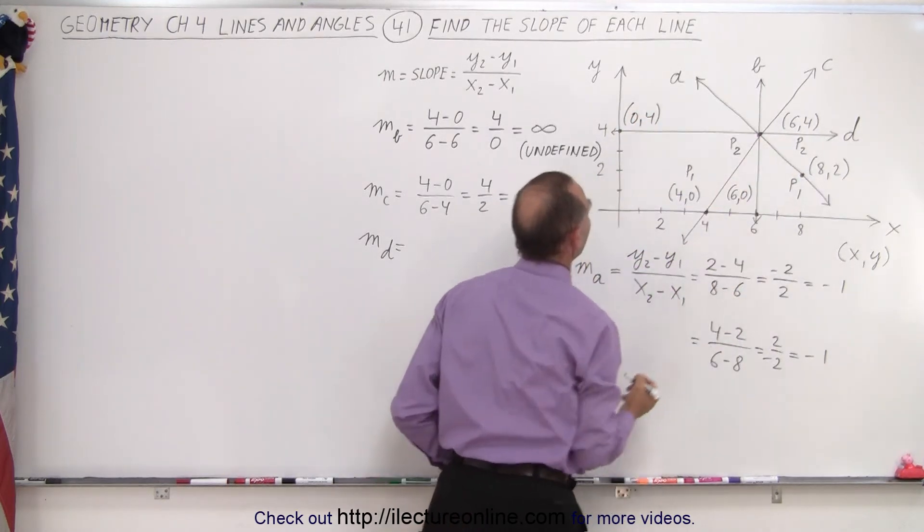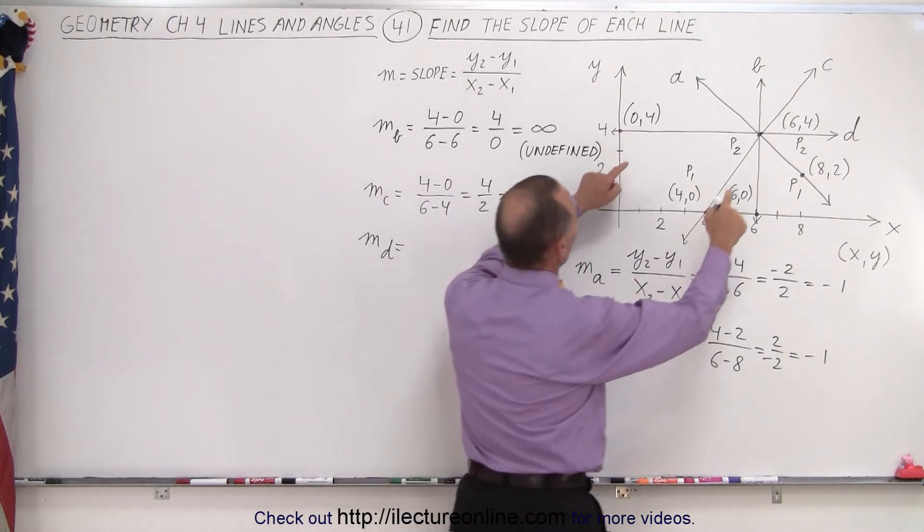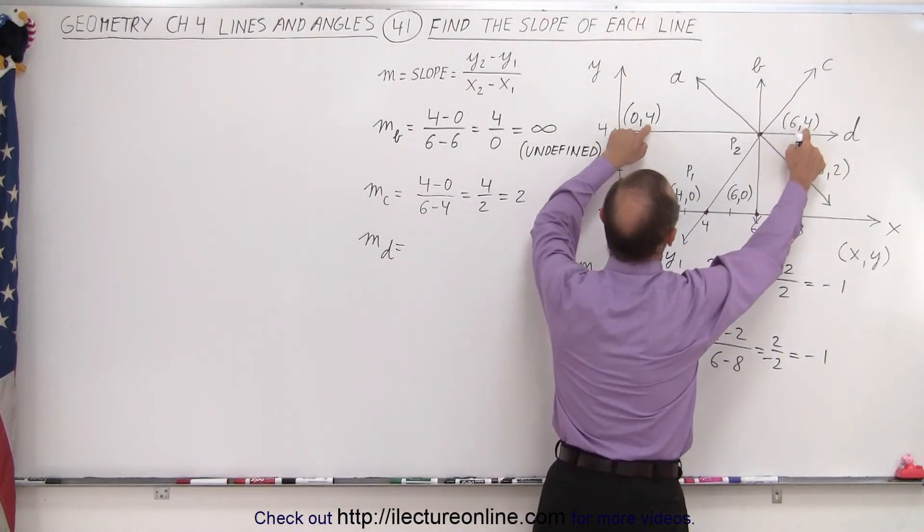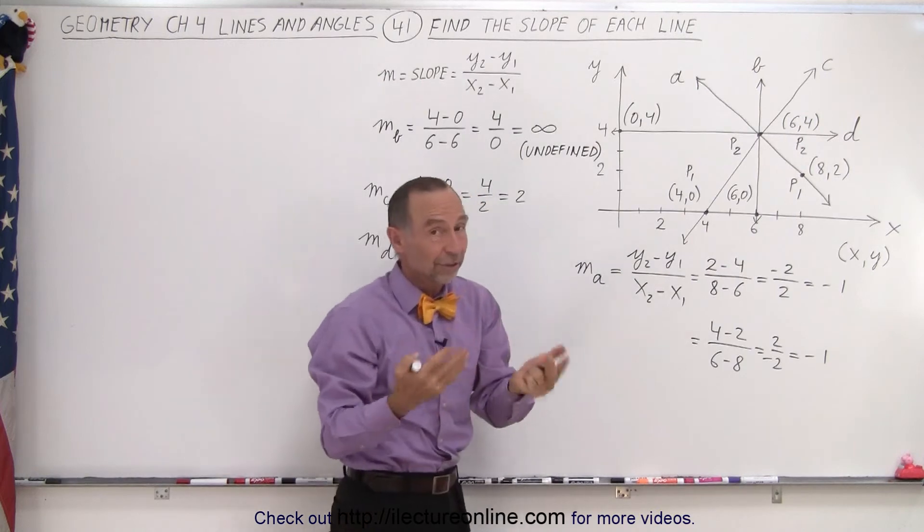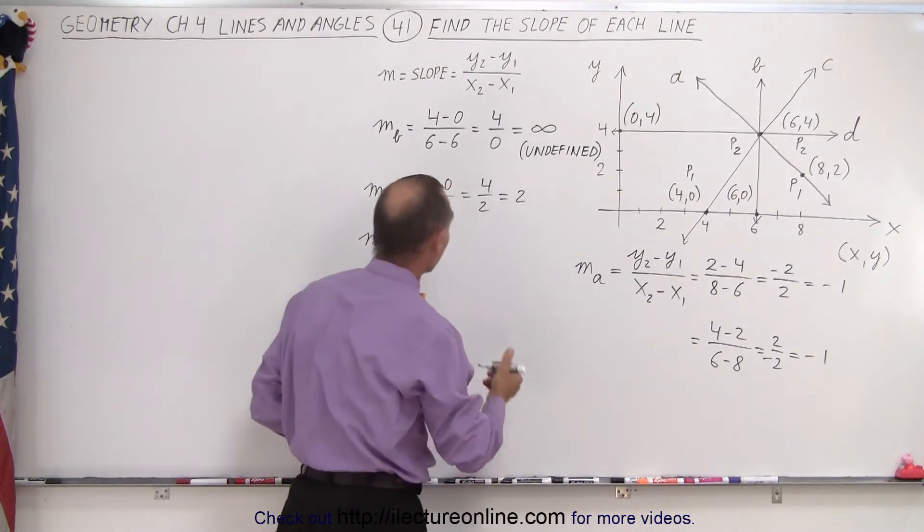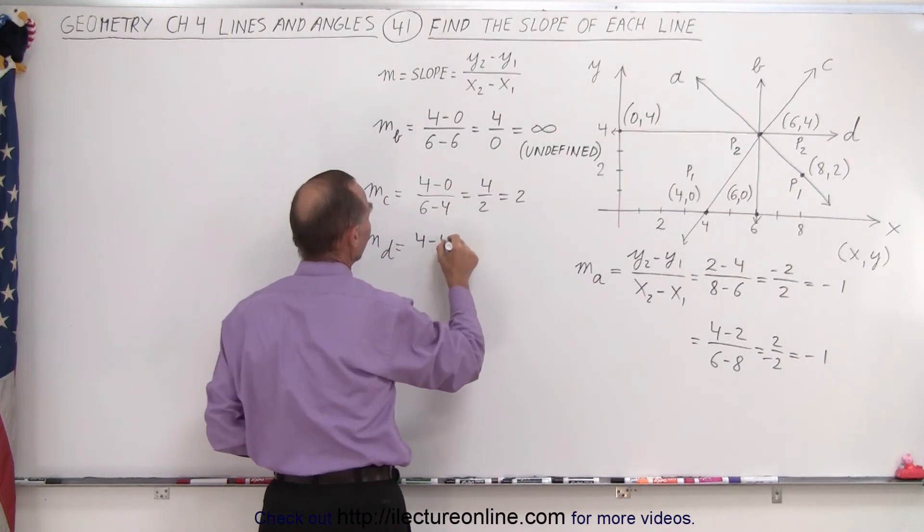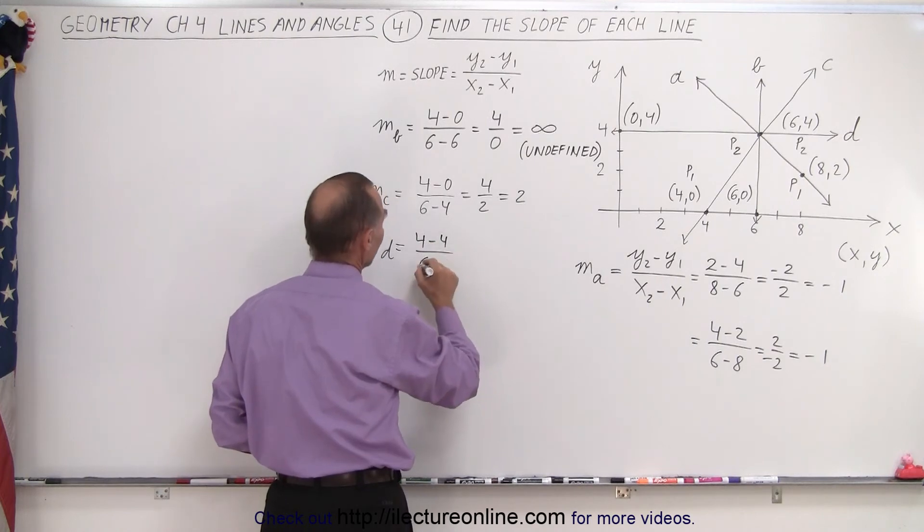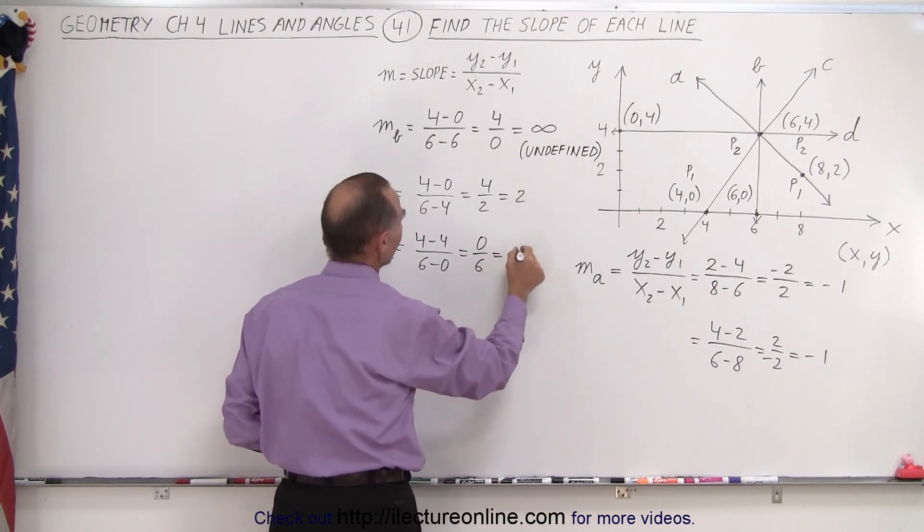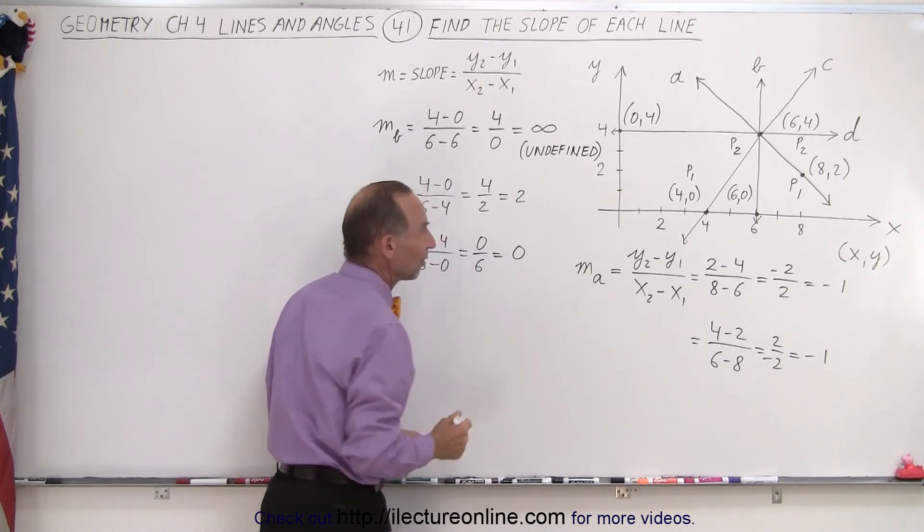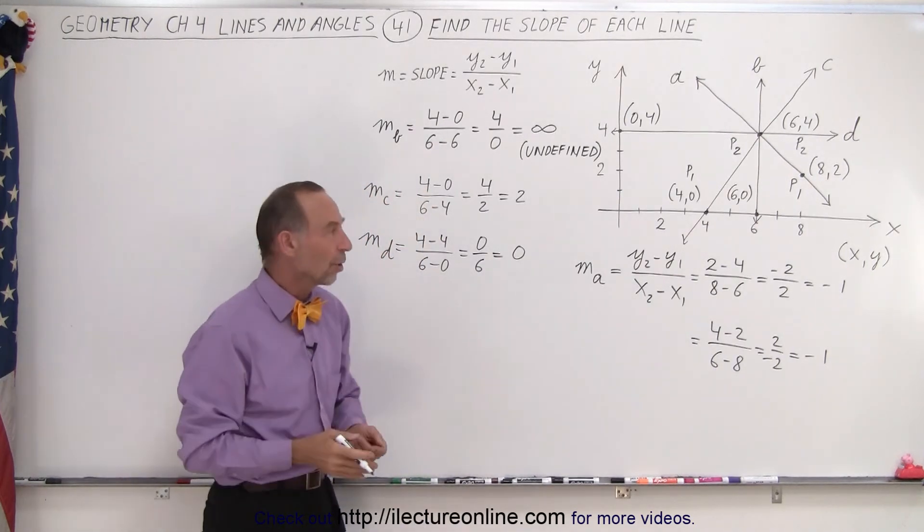And so first you find the difference in the y values, and notice 4 minus 4 is 0. Well, if there's no difference in the y values, then there's no slope. So this would be 4 minus 4 divided by 6 minus 0, which is 0 over 6, which is 0. So in this case, you can see that horizontal lines have zero slope.